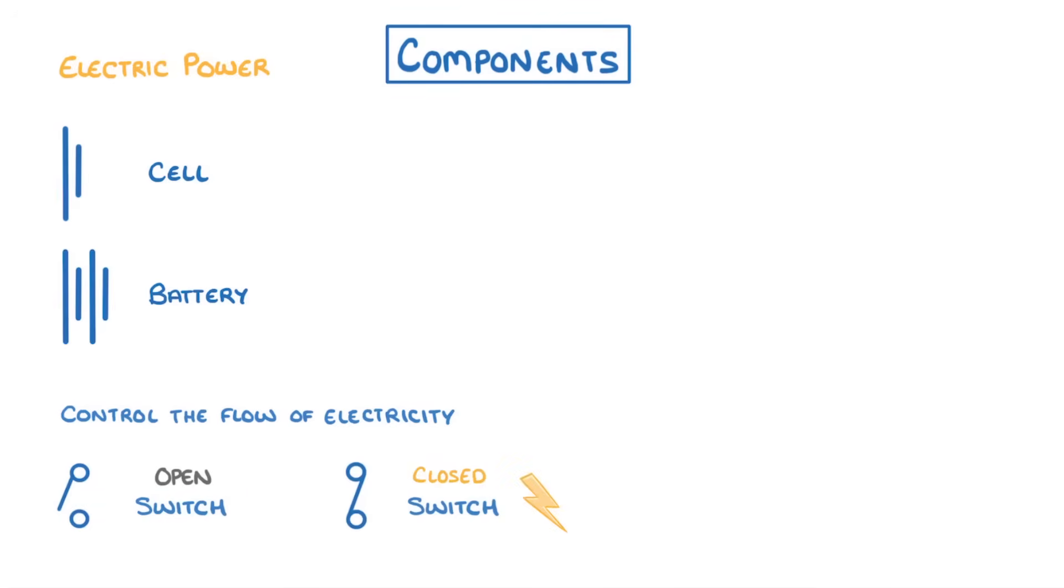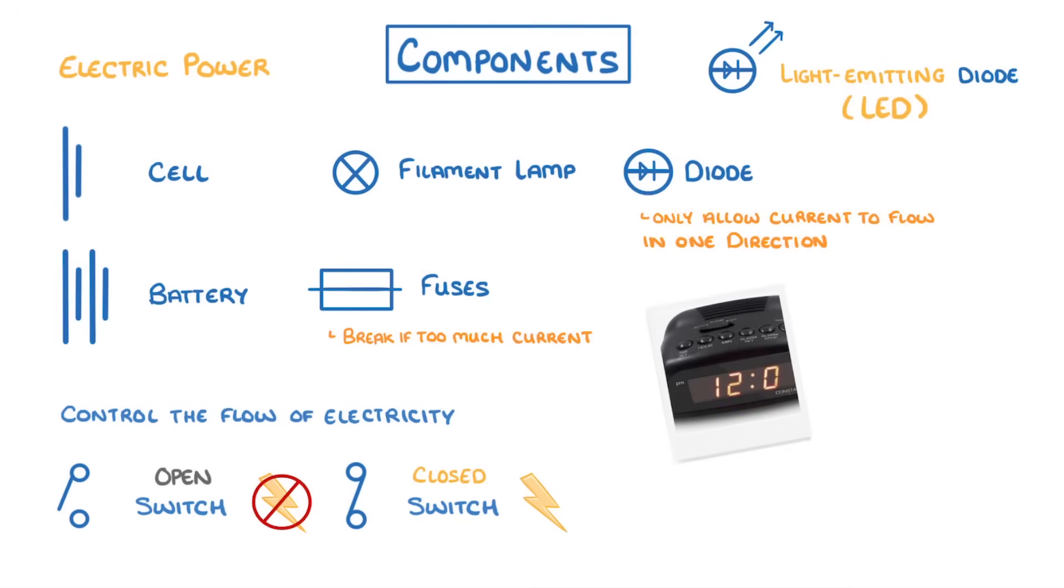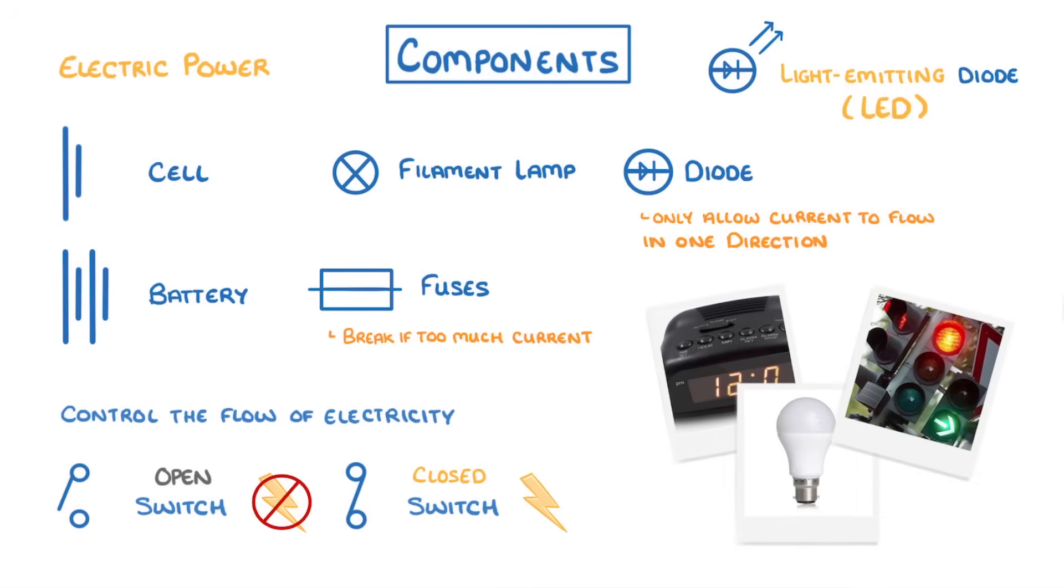We also have filament lamps which are just small bulbs, fuses which break if too much current flows through the circuit, and diodes which only allow current to flow in one direction. A special type of diode is the light emitting diode or LED which emits light when current flows through in the forward direction. These are the ones you see in things like alarm clocks, traffic lights, and new LED bulbs.